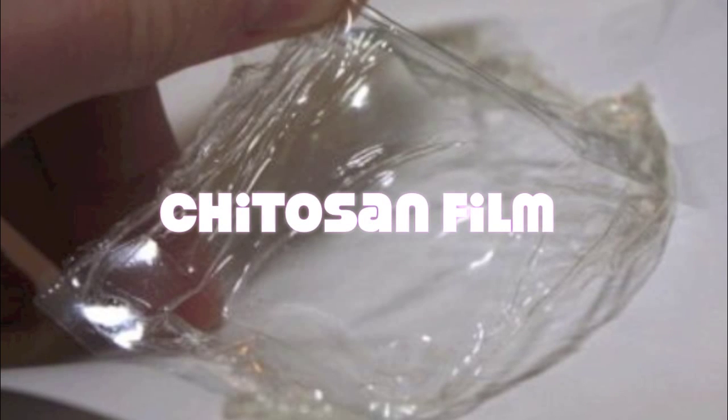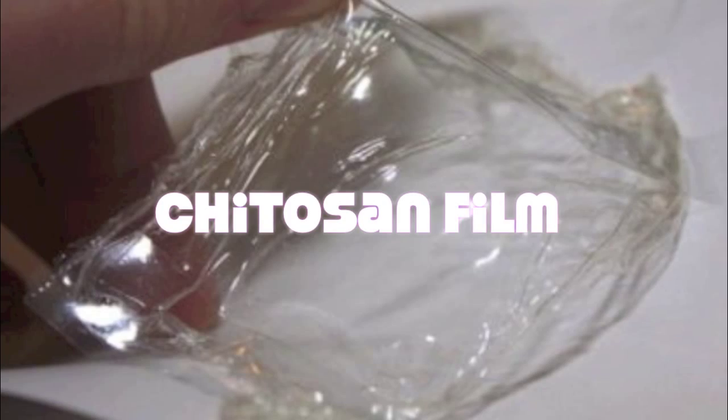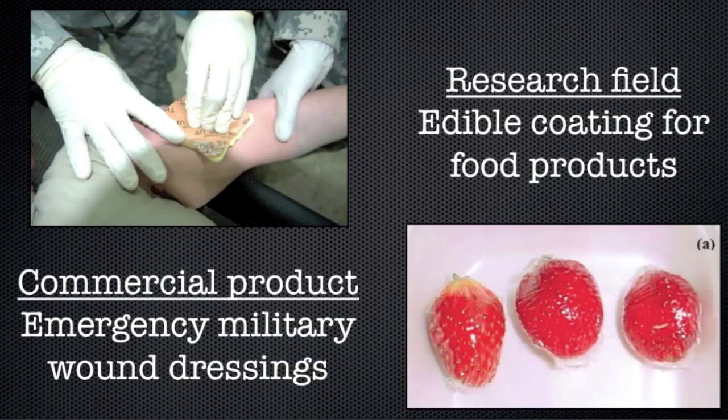We started with the chitosan film, which is a well-researched intrinsically antibacterial polysaccharide which can be easily made into a phone surface. It is currently being used by the military as a wound dressing to prevent infection and as an edible coating for food products to increase shelf stability.